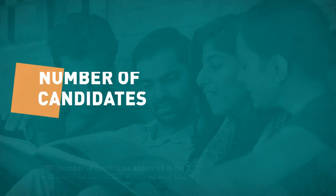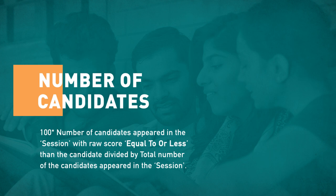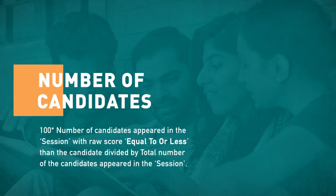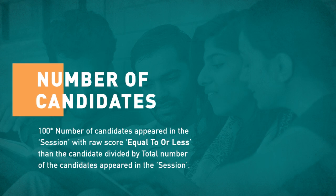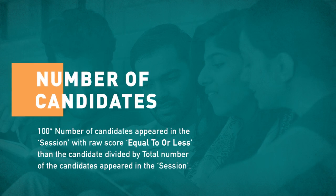The rank list will be prepared on the basis of percentile scores of the candidates in JEE Main 2019. NTA will use the following method to calculate the percentile score of a candidate: 100 multiplied by the number of candidates appeared in the session with raw score equal to or less than the candidate's score, divided by the total number of candidates appeared in the session.